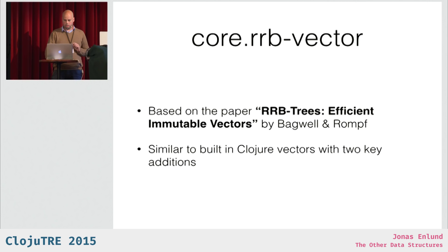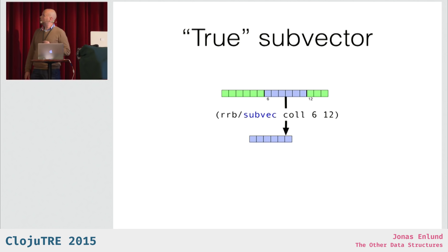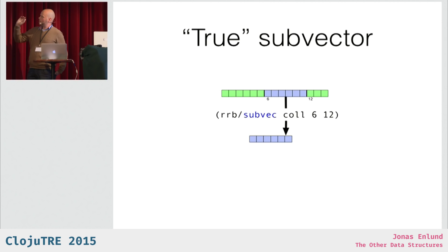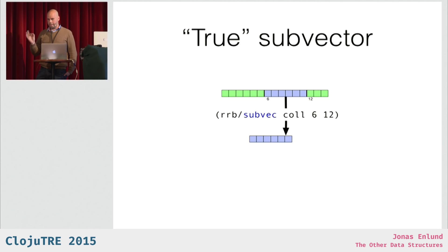But they have two key additional features. The first one is what I call true subvector. You have subvec for Clojure vectors as well, but for Clojure vectors it's more like a window — if you call subvec, the green part of the original vector won't be garbage collected. But this returns a completely new vector, with structural sharing, but still completely new. So the discarded part can be garbage collected.